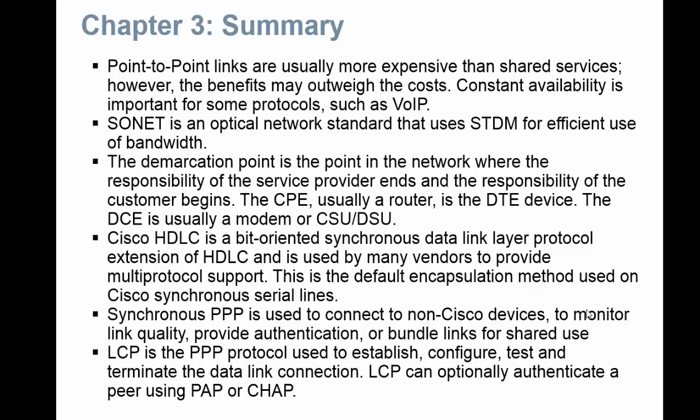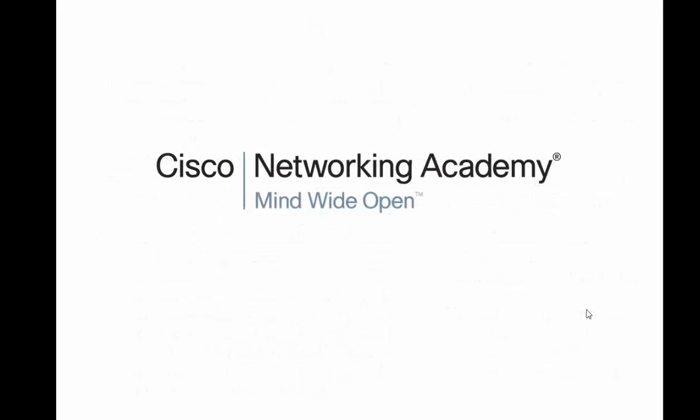Synchronous PPP is used to connect to non-Cisco devices and to monitor the link quality. LCP is a PPP protocol used to establish, configure, test, and terminate data link connections. LCP can optionally authenticate using PAP or CHAP. That finishes up point-to-point connections.